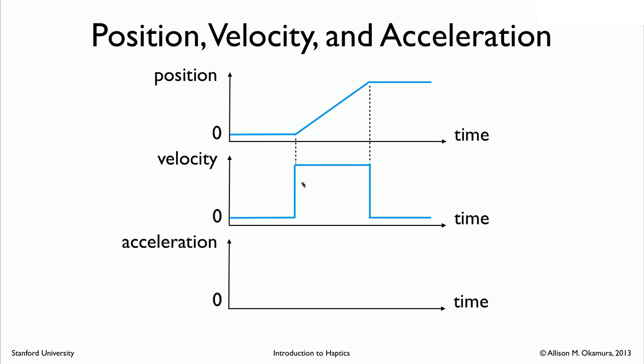And so you have it jump to this constant value right here. And then when it slows down again, we go back down. And then we hold constant at zero velocity again until the end.